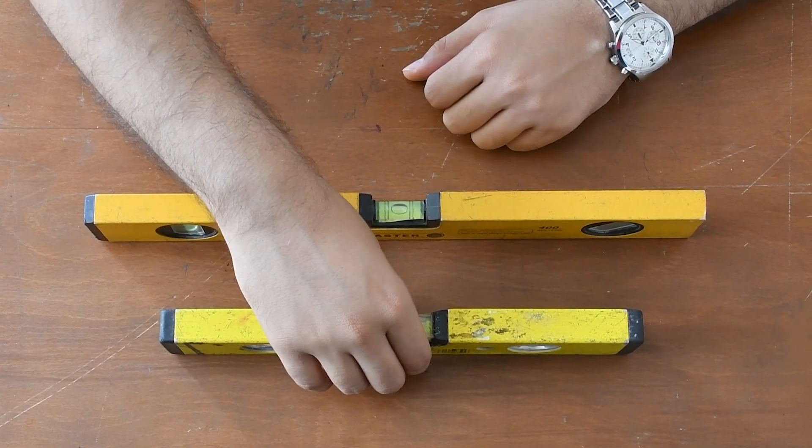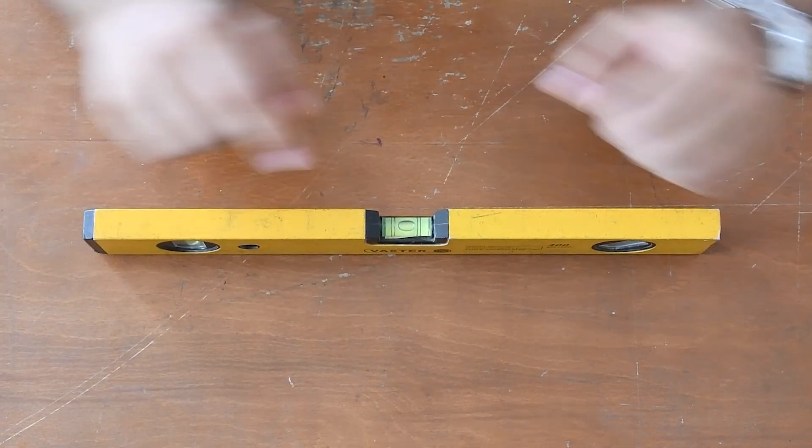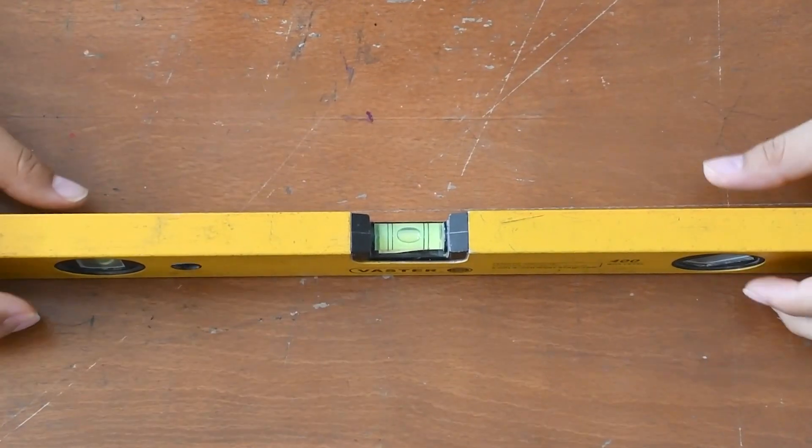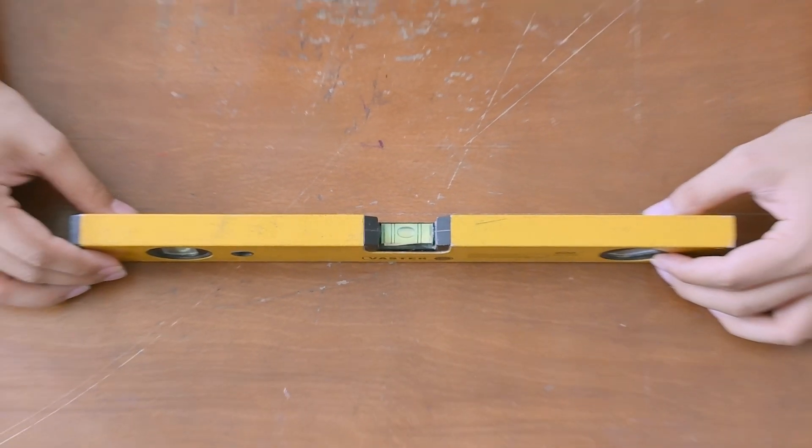Well, I put this one aside and I start to check this one. As I said before, this spirit level shows that the table has no slope. Yes, the bubble is standing almost between two lines.